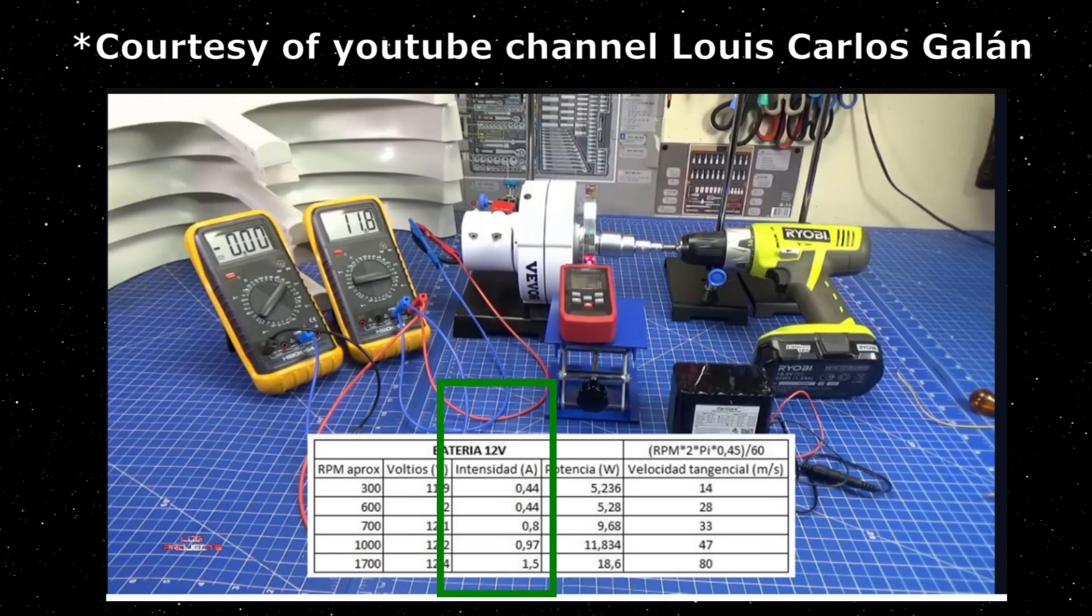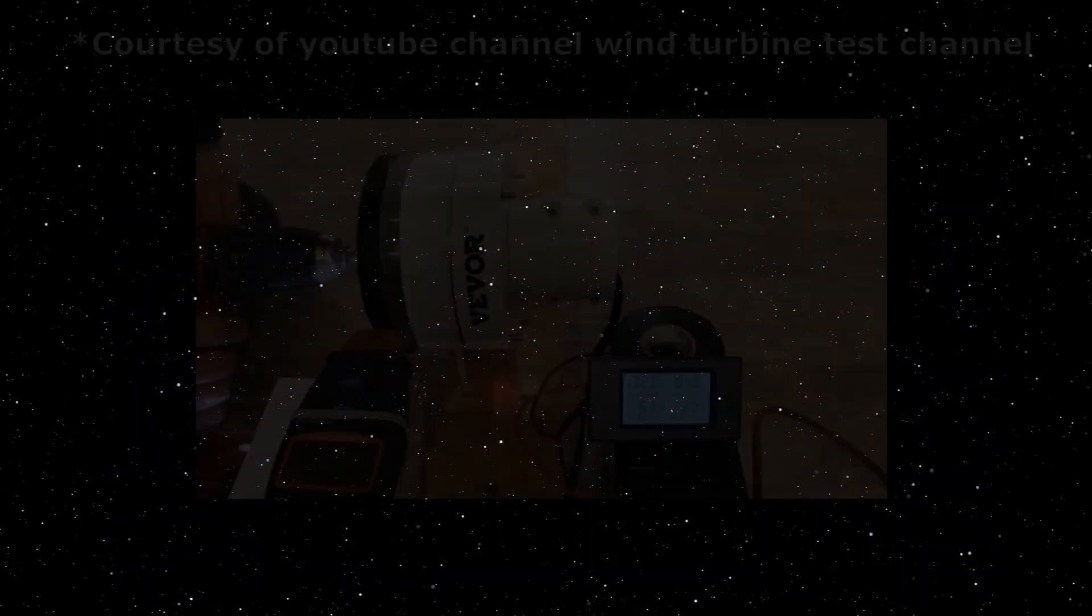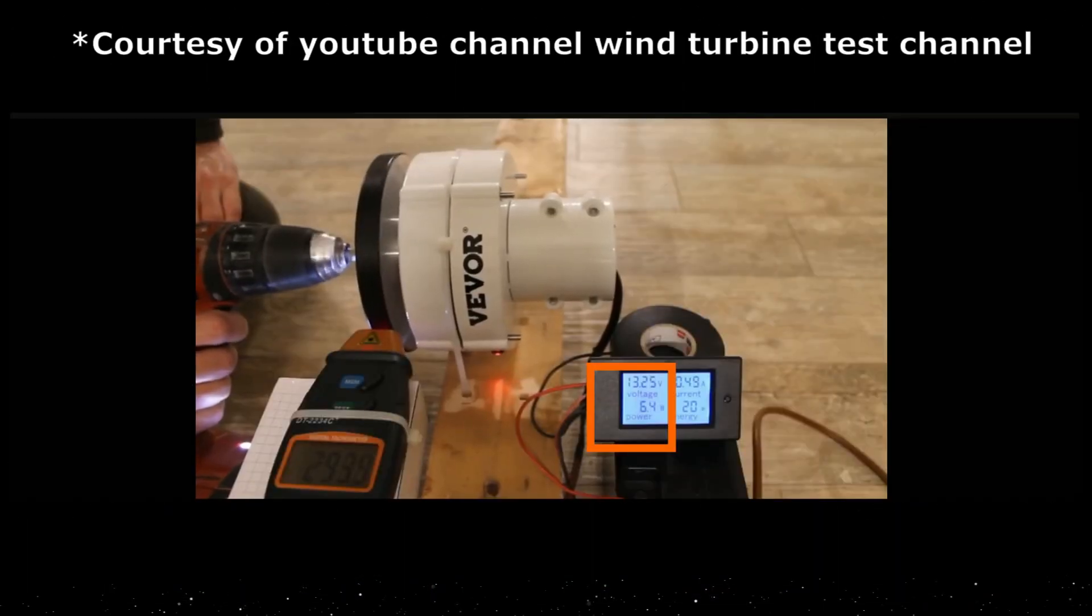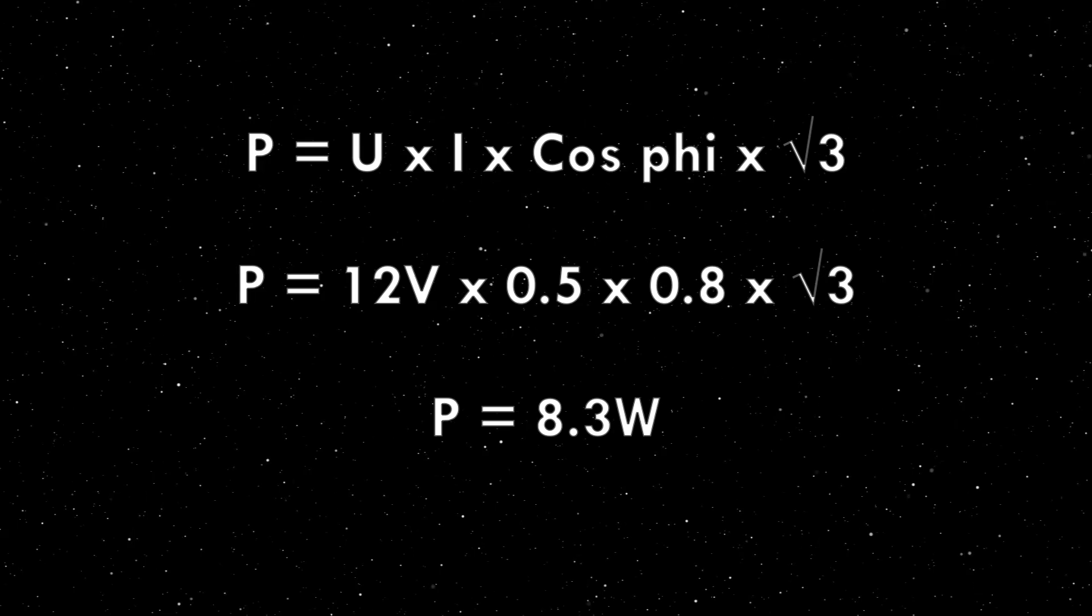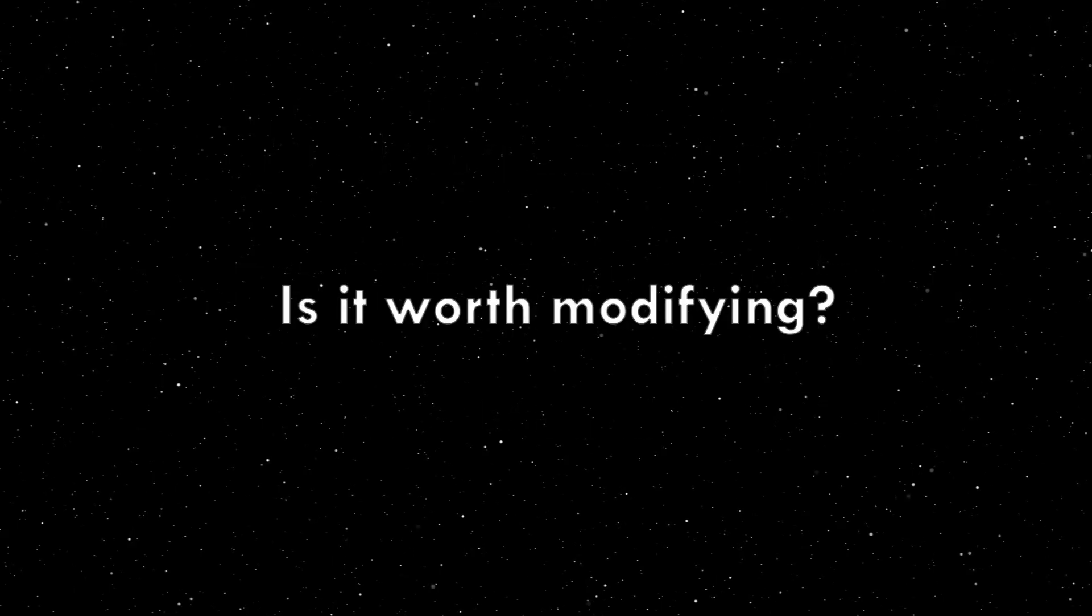If the connections were bad due to the oxide layer of aluminum, we would expect to have big differences in output readings between generators. If we look at the power output of the other channels that tested this generator, we can say that they are pretty much all the same, so is it worth modifying then?